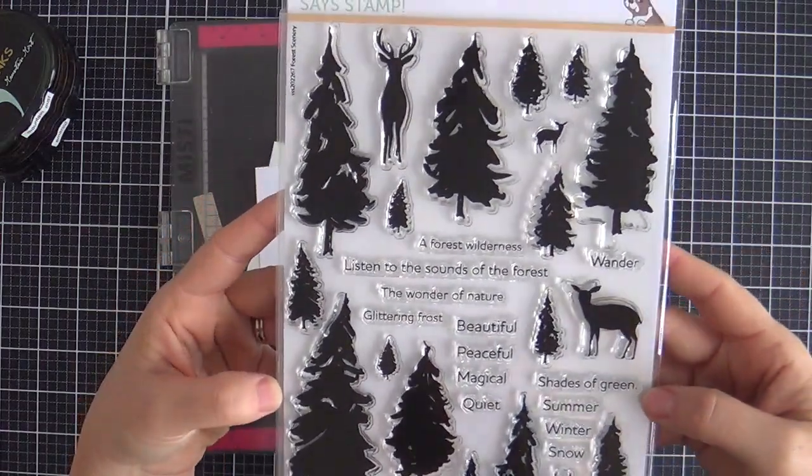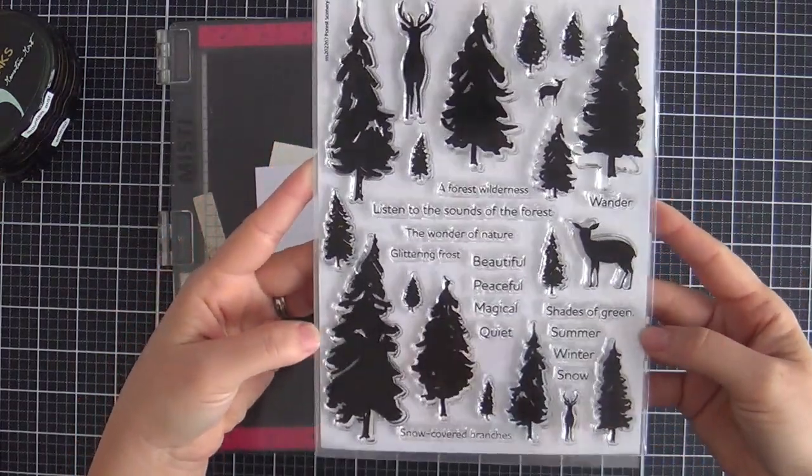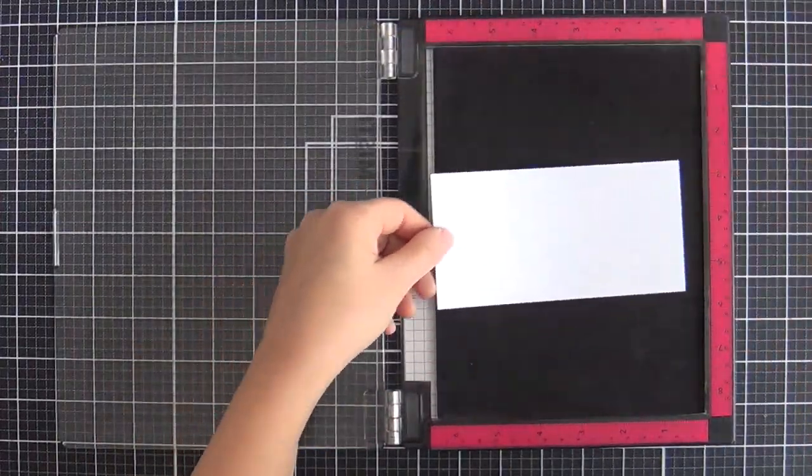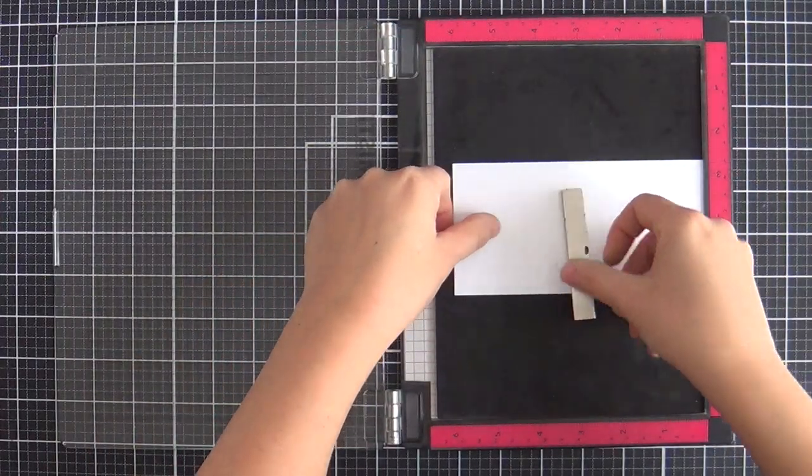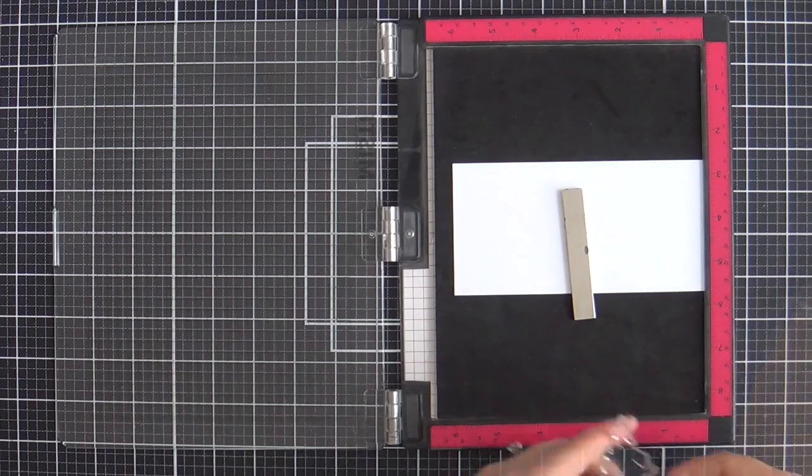And here she is in all her glory. This is one of those stamp sets where they're all silhouettes, they're all solids. So we're going to stamp it up today.